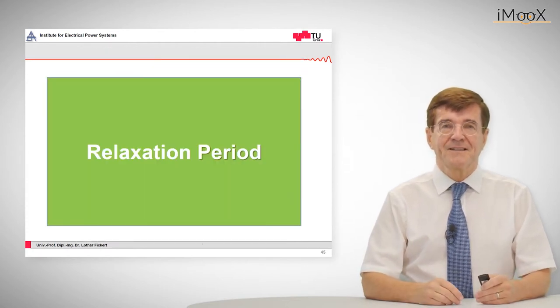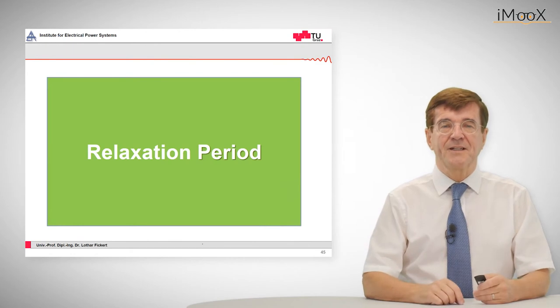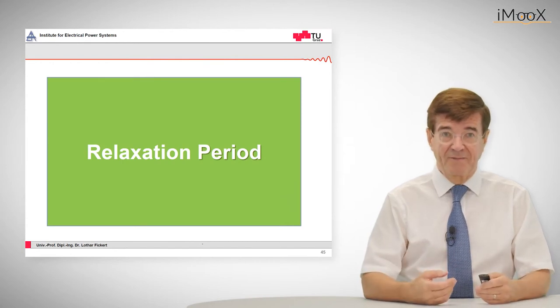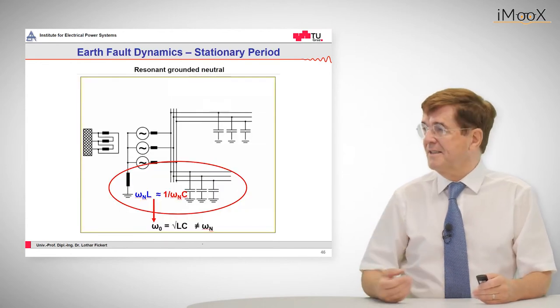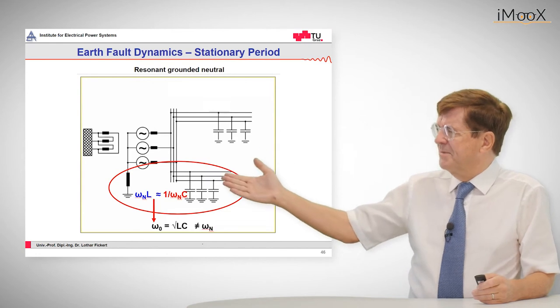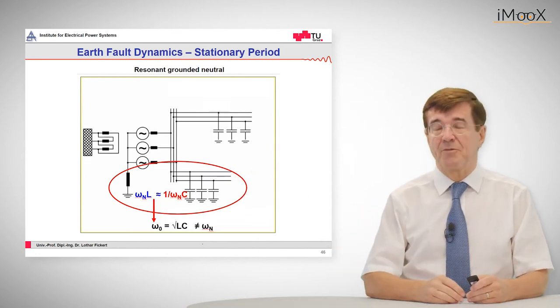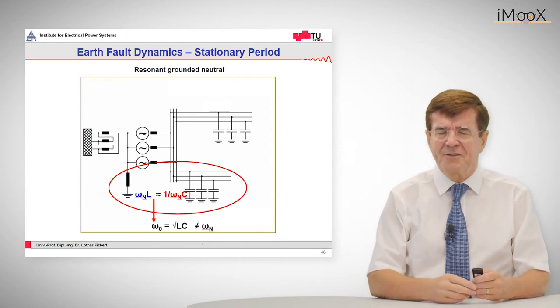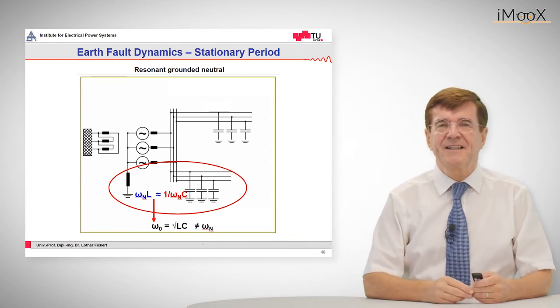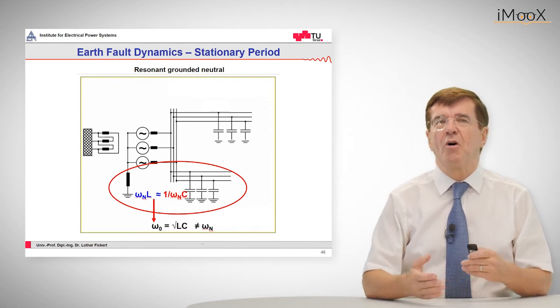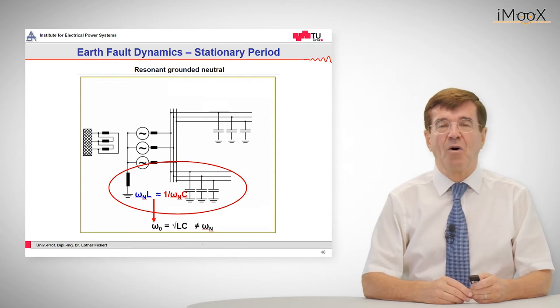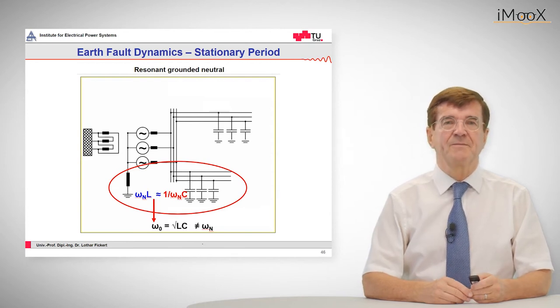The last section of an earth fault is the relaxation period. That is the time after the fault has been switched off or has extinguished by itself. And in this case we can see, just by looking at this picture, that we have a parallel resonant circuit made up of an inductance and a capacitance. And the trick here is that they are not perfectly tuned, but they are more or less tuned to resonance frequency.